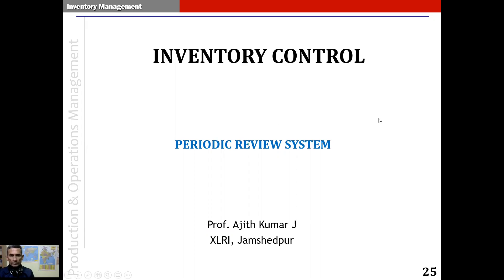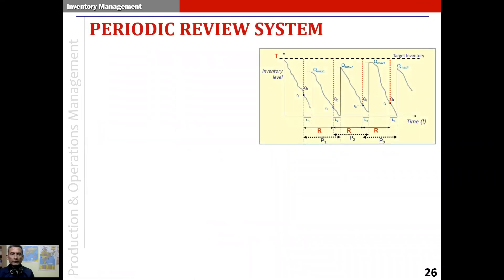The periodic review system contrasts with the continuous review system. In this system, instead of fixing the order quantity Q and the reorder point R, we fix the review period, capital R, as you see in this figure, and the target inventory level T. The review period refers to the time that elapses between two consecutive orders or two consecutive times that we review the inventory.